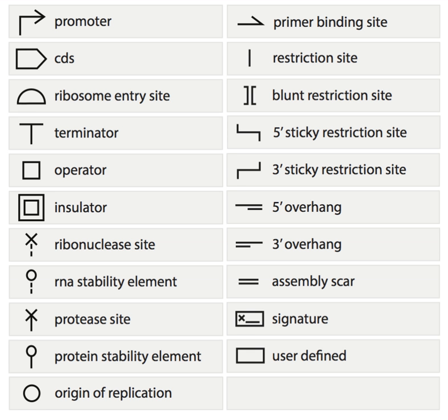The Gibson scarless assembly method allows the joining of multiple BioBricks simultaneously. This method requires the desired sequences to have an overlap of 20 to 150 base pairs. Because BioBricks do not have this overlap, this method requires PCR primers to create overhangs between adjacent BioBricks. T5 exonuclease attacks the 5' ends of sequences, creating single-stranded DNA at the ends of all sequences where the different components are designed to anneal. DNA polymerase then adds DNA to fill gaps in the annealed components, and DNA ligase seals the final strands.